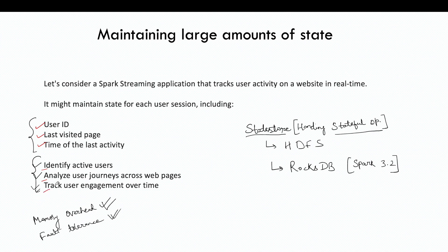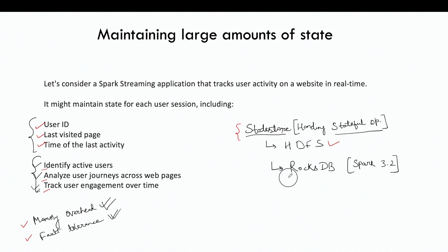We also want to see how users are engaging over time. As the number of users grows, the streaming application should be able to handle increased memory overhead and be fault tolerant. In Spark streaming, we have something called a state store used for stateful operations. There are two kinds of state store providers: HDFS and RocksDB, available from Spark 3.2.